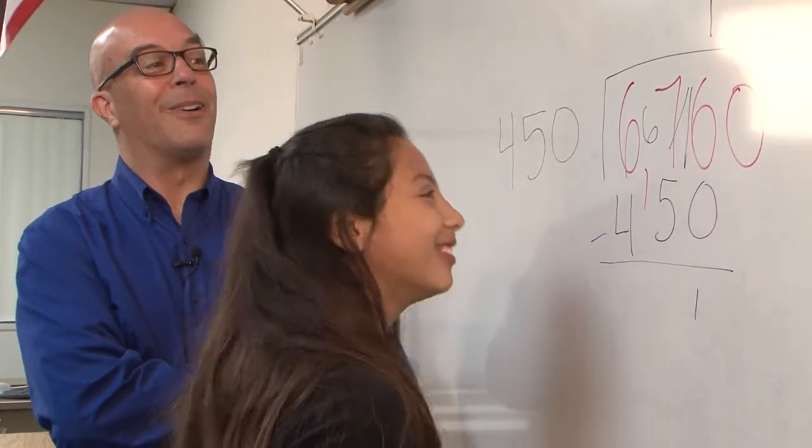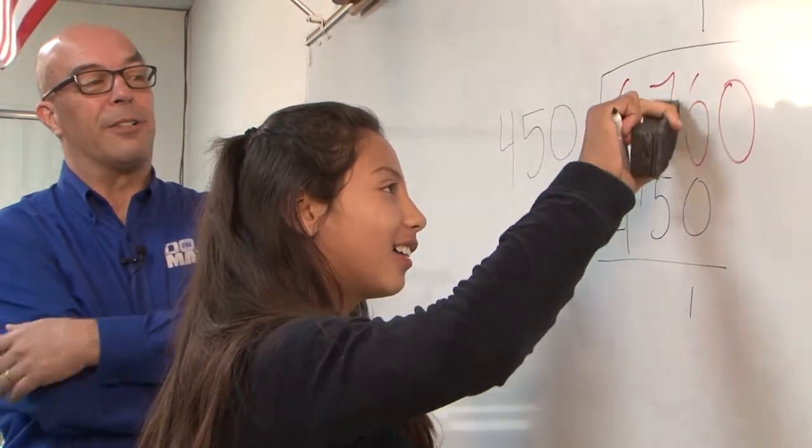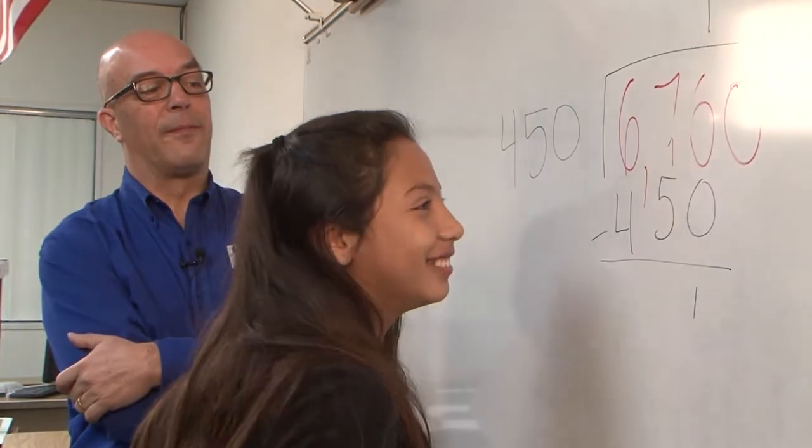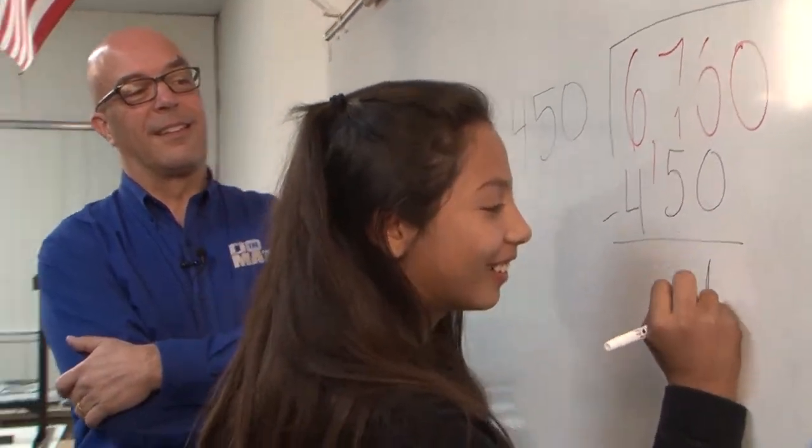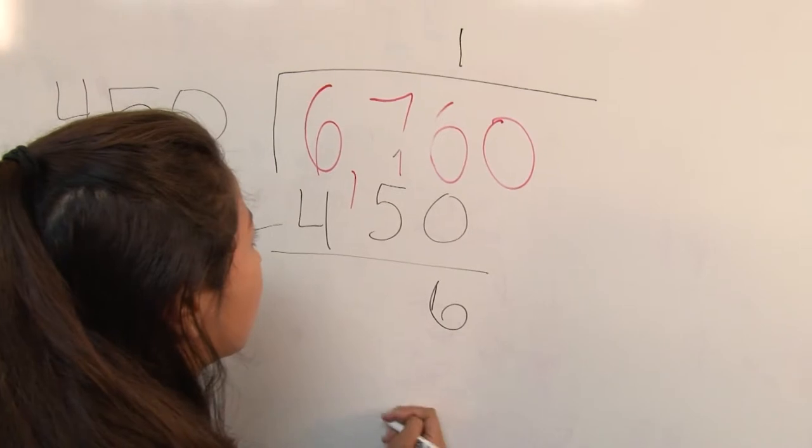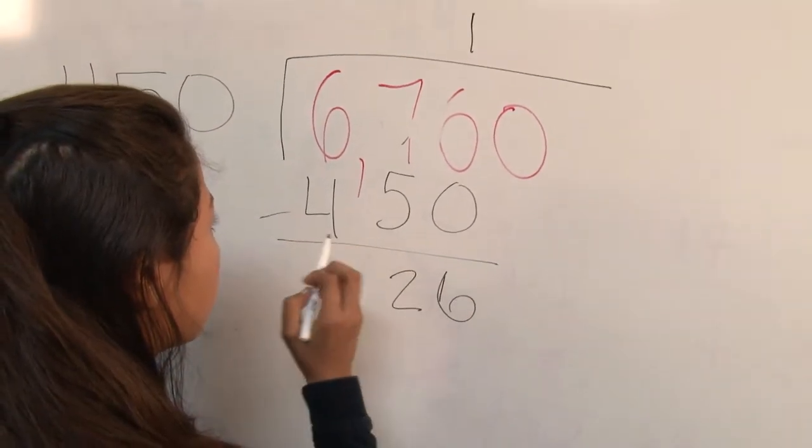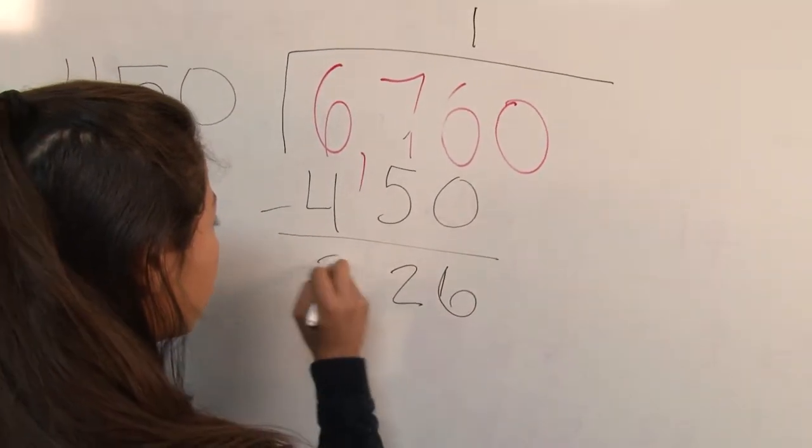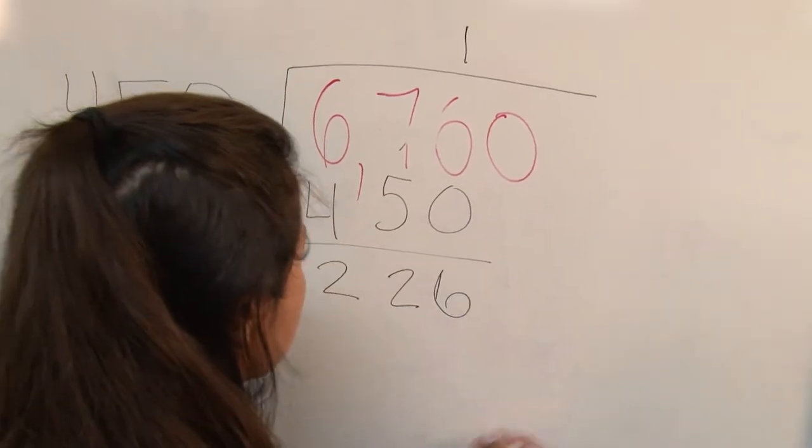You didn't have to borrow, right? You were thinking about it already. But you could just go six minus zero. All right. So now what?